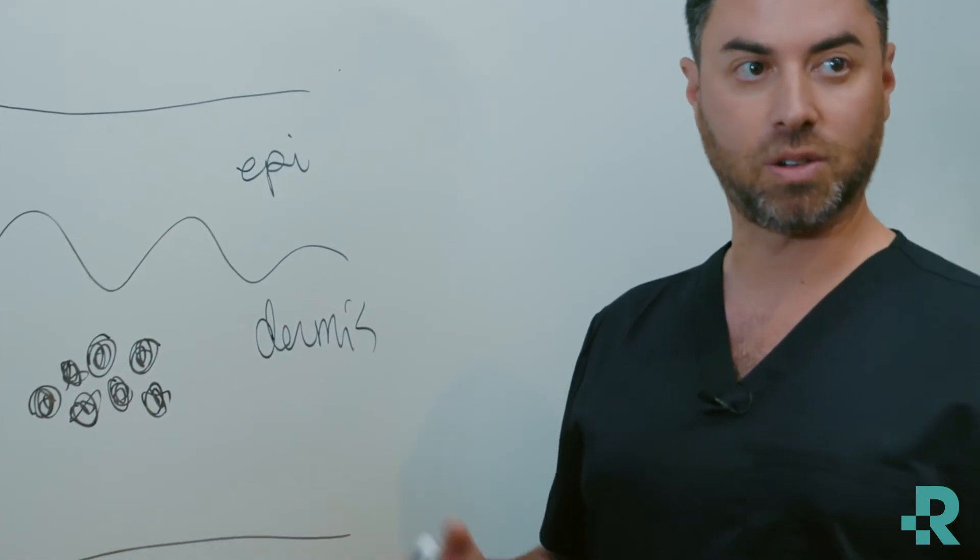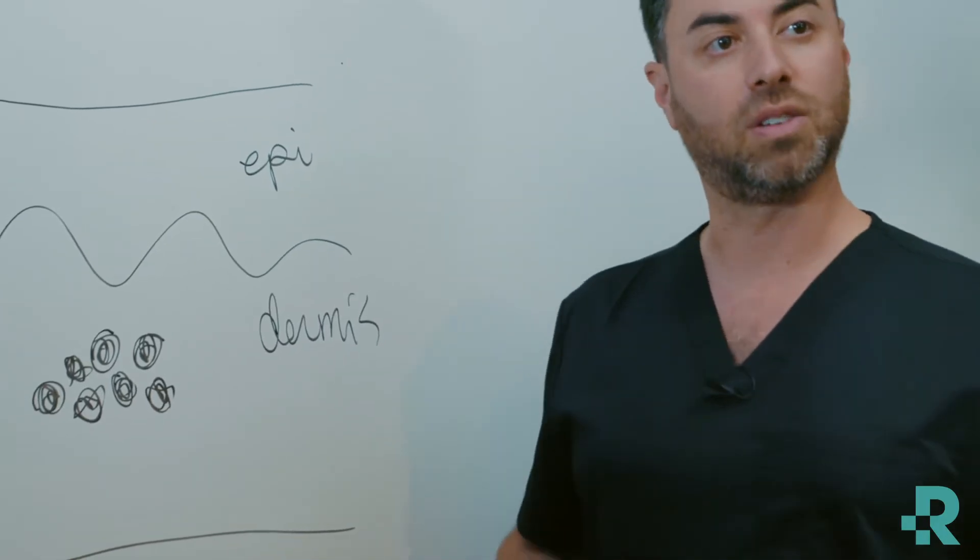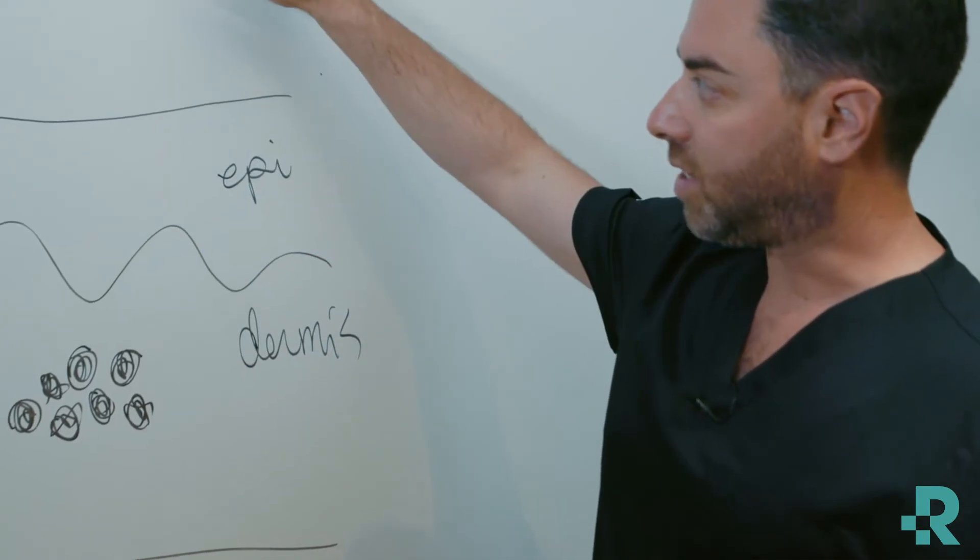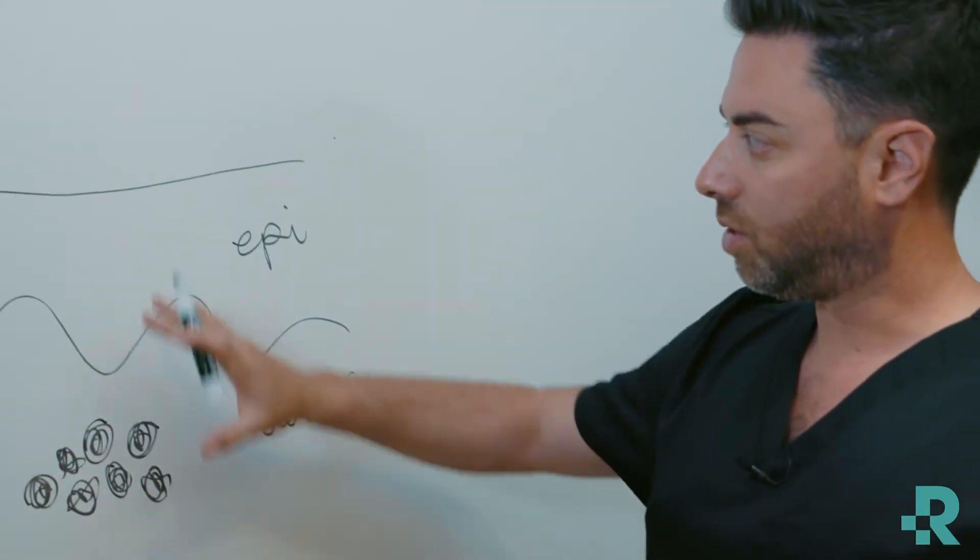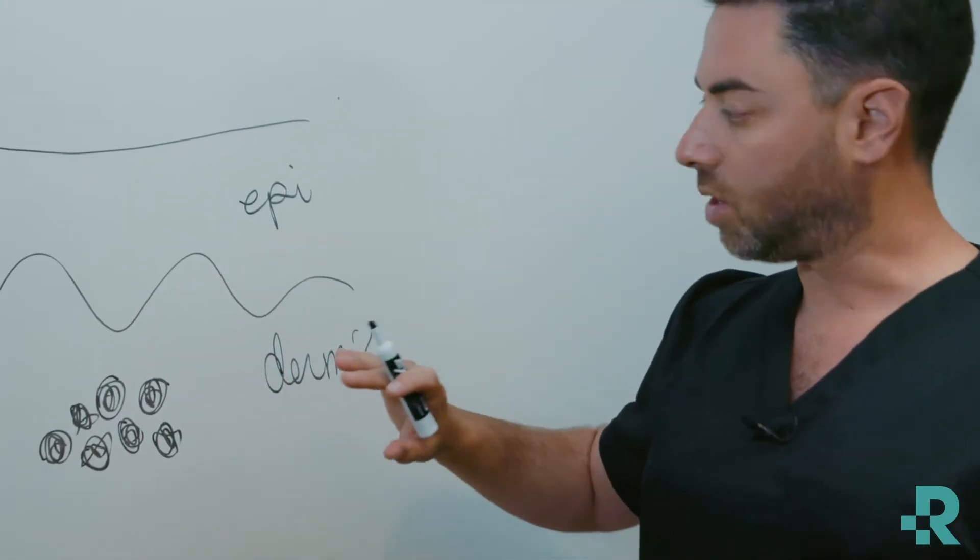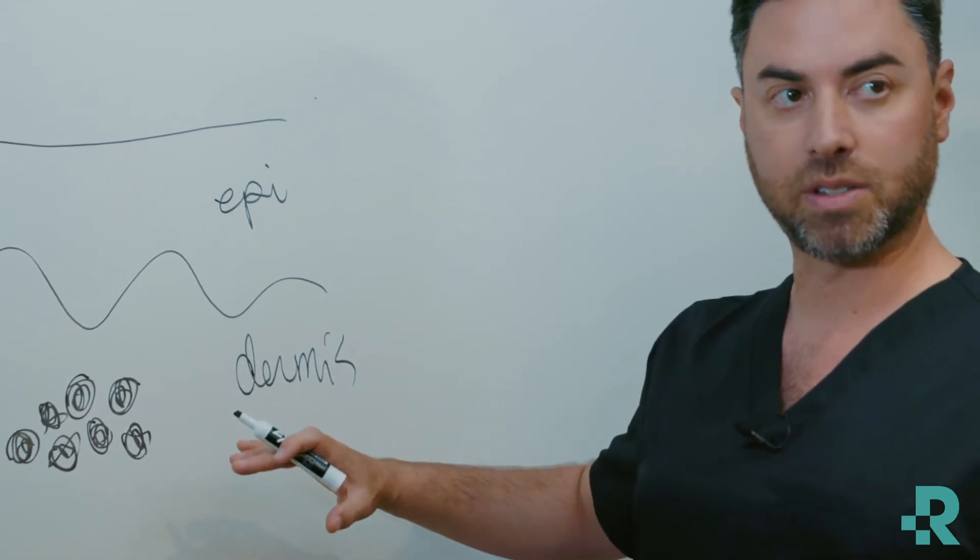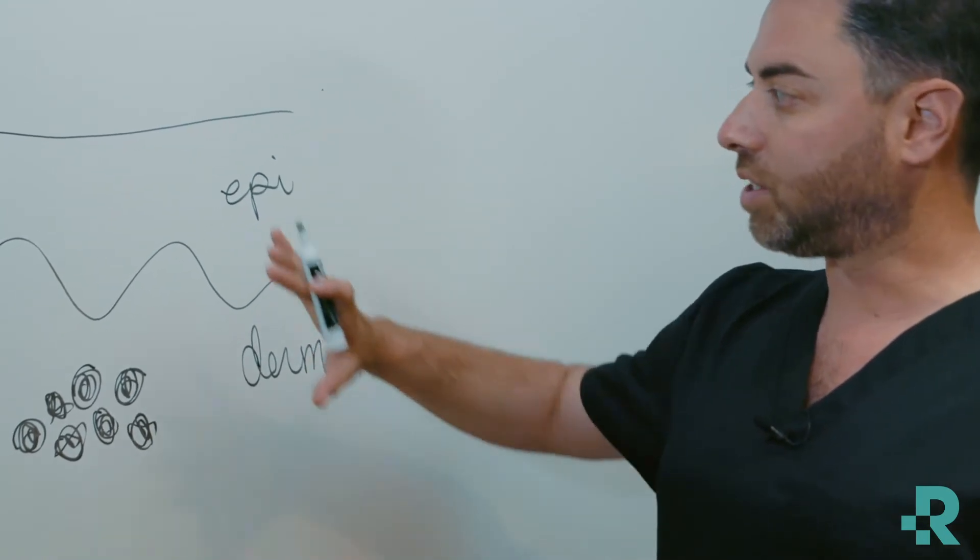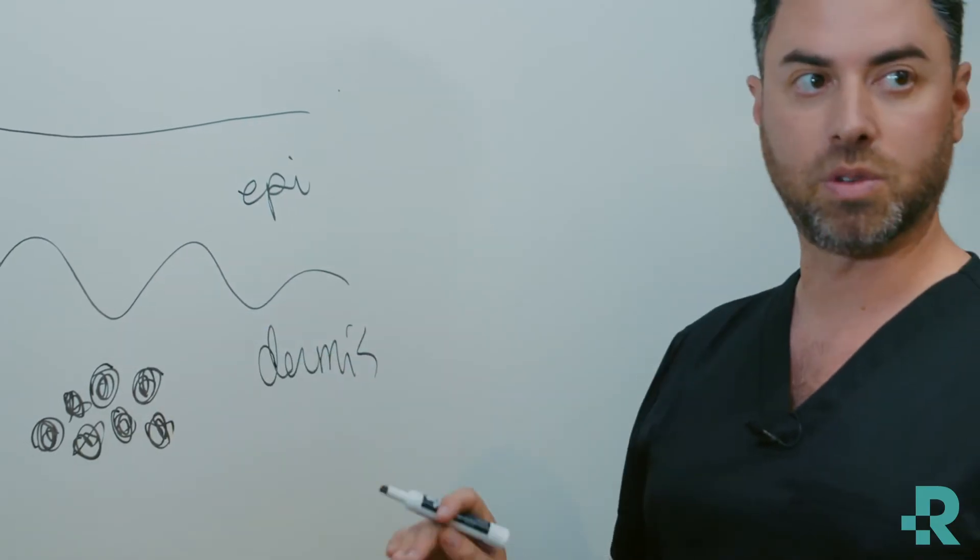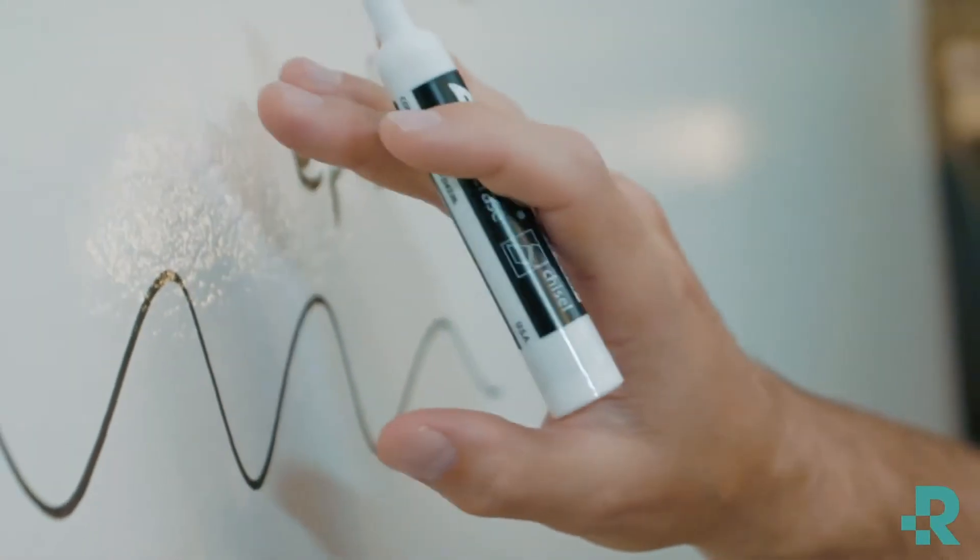And you want to pursue laser tattoo removal. We have to now pass energy through the uppermost layers of the skin so that we can hit our target, which is the ink located in the dermis, without disrupting or damaging the epidermis or the more superficial dermis. So light, and a laser is a photon that's emitted, and it travels through space and time like a wave.